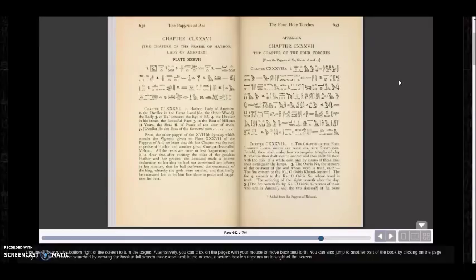It says, The chapter of the four lighted lamps, and those are the four shafts, which are made for the spirit's soul. Behold, thou shalt make four rectangular troughs of clay. And troughs, that is a word that was used as a description of the text in Egypt. What are troughs? They can be channels. That's a perfect definition of four shafts cut in the side of the Great Pyramid.